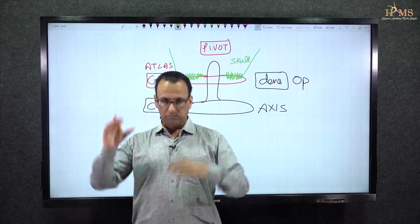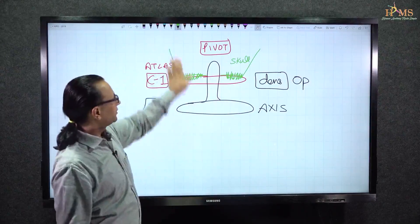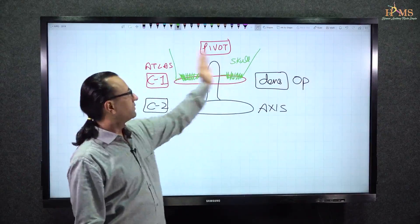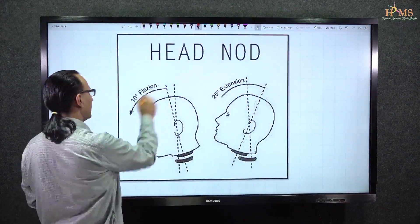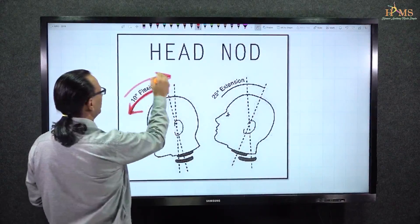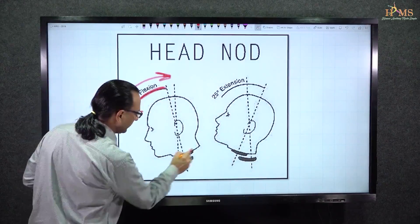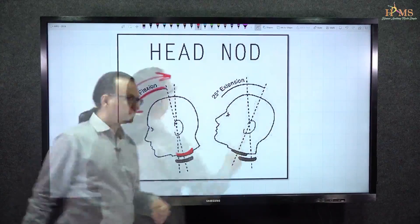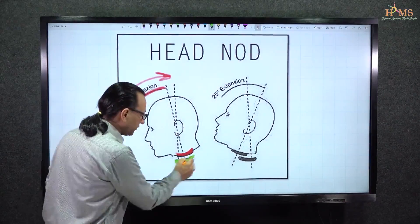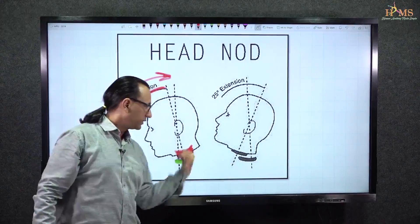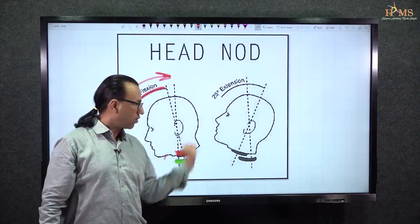The atlanto-occipital joint is for the yes movement, where the occipital bone moves on the atlas bone. The atlanto-occipital joint is an ellipsoid synovial joint, which allows flexion and extension — the nodding or yes movement. Here you can see the condyles of the occipital bone moving on the condyles of the atlas bone. The joint has an elliptical shape.